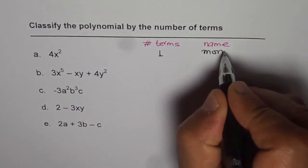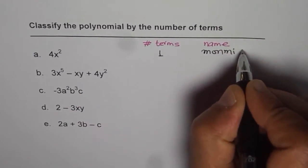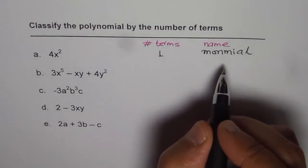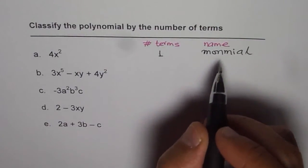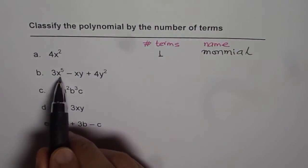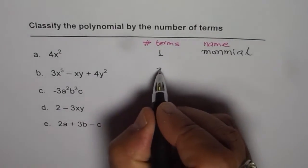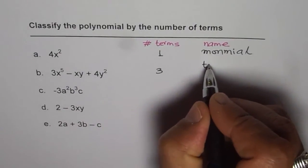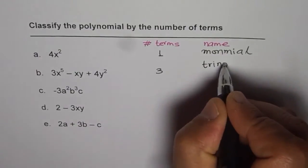Monomial means 1. That is the name for the polynomial. Now in part B, we have 1, 2, 3 terms. And therefore, it's called trinomial.